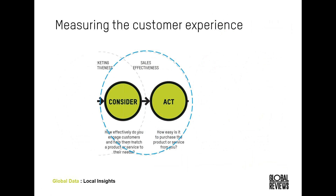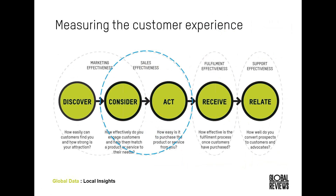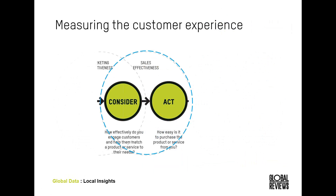Looking specifically at the first three phases of this funnel — the Discover, the Consider, and the Act phase — these are very important parts of the funnel and the earlier parts of the journey. In the Discover phase, we use a program called the Digital Marketing Effectiveness Program to measure consumer experience as they move through the Discover phase when looking to purchase a product in your industry. This program measures the pathway to your website and helps clients develop performance measurements and strategic objectives in minimizing lost opportunities and maximizing return on marketing investment. What I'm going to talk about this morning in more detail is the Consider and the Act phase, where we're looking at sales effectiveness.